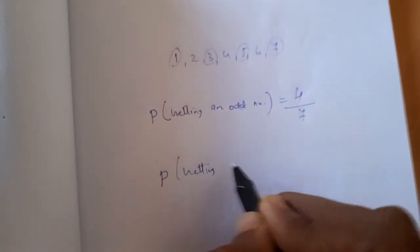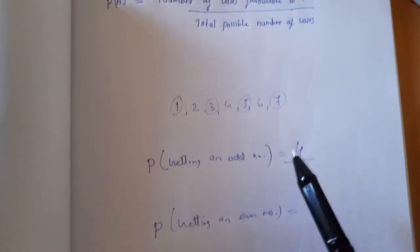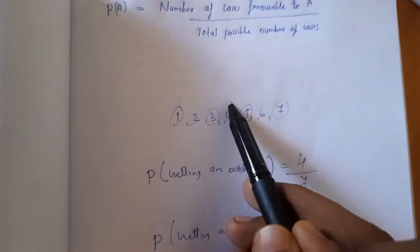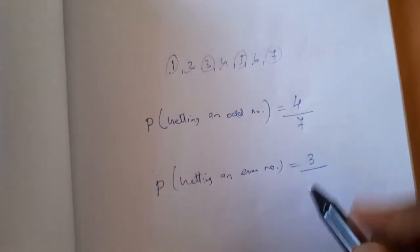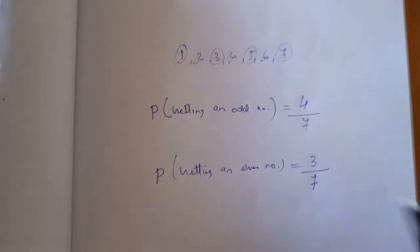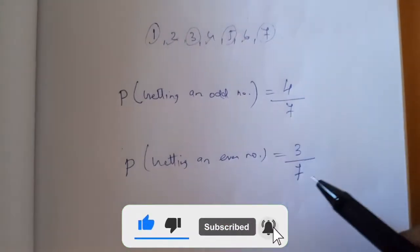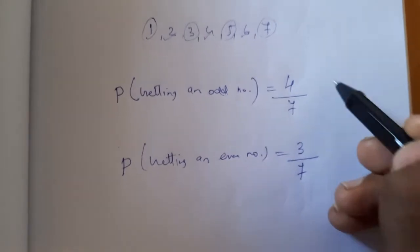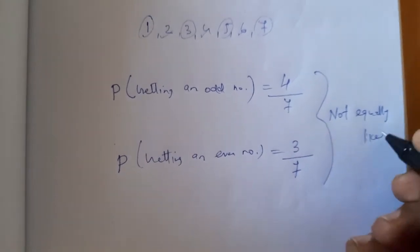Now, probability of getting an even number: the even numbers are 2 and 4, so there are 3 favorable cases. The probability of getting an even number is 3 divided by 7. We can see that the probability of getting an odd number is higher than the probability of getting an even number — they are not equally likely.